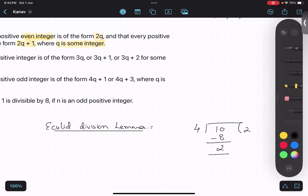So can I write 10 as 4 multiplied by 2 plus this remainder? Can I say this thing? Yes, sir.